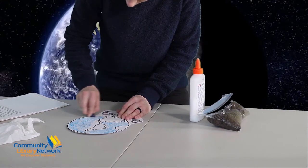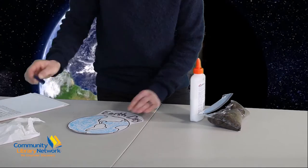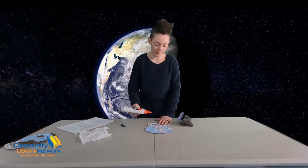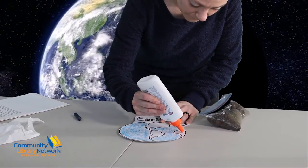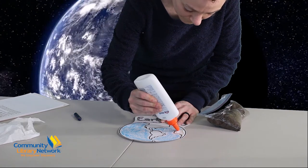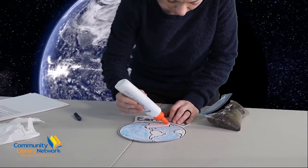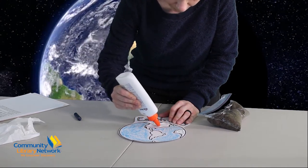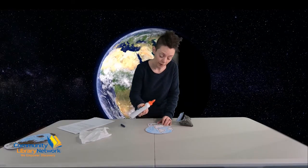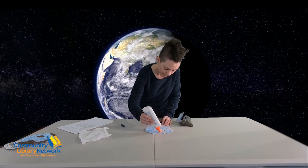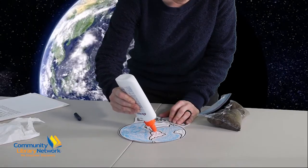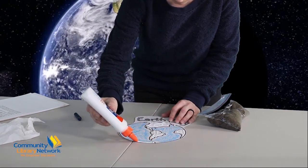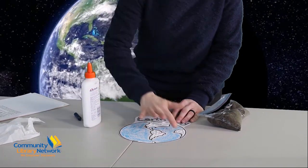After your oceans look as you would like them to, you will take your liquid glue and spread it on the continents. Once you have a good amount of glue all over your continents, you can use either a paintbrush or your finger to spread your glue nice and even. You don't want big clumps of glue, but you do need enough to hold the dirt in place. All right, I think that looks good. I'm going to use my finger.